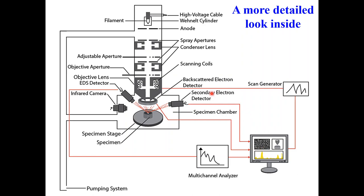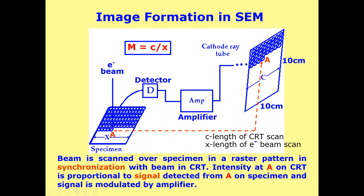Here you can see how these different parts are connected with a computer screen. You can easily understand the logic of how the electrons are detected with the help of different detectors, and all the wiring is routed to a computer screen where you can get the image and the EDX spectrum of the specimen you analyze with the scanning electron microscope.